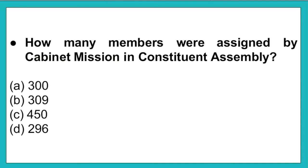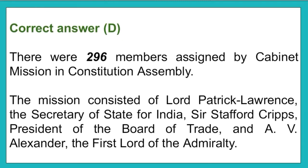The next question: How many members were assigned by the cabinet mission in the constitution assembly? Option A: 300. Option B: 309. Option C: 450. Option D: 296. The correct answer is option D, that is there were 296 members assigned by the cabinet mission in the constitution assembly. The mission consisted of Lord Patrick Lawrence, Secretary of State for India; Sir Stafford Cripps, President of the Board of Trade; and A.V. Alexander, Lord of the Admiralty.